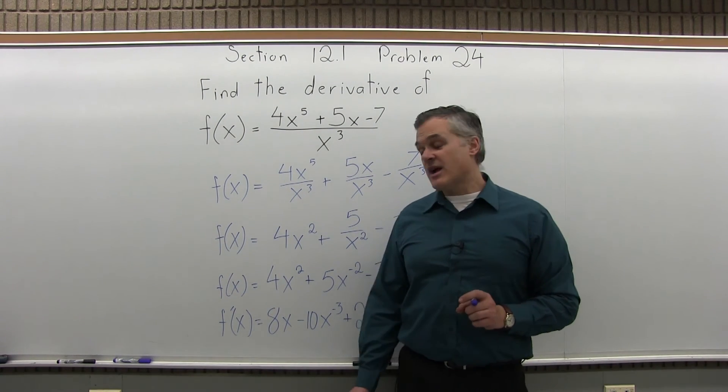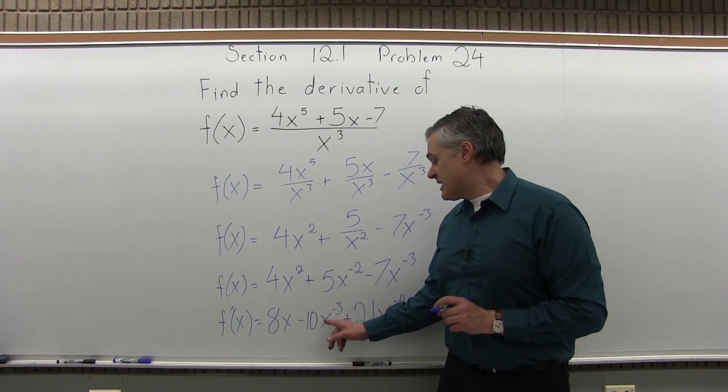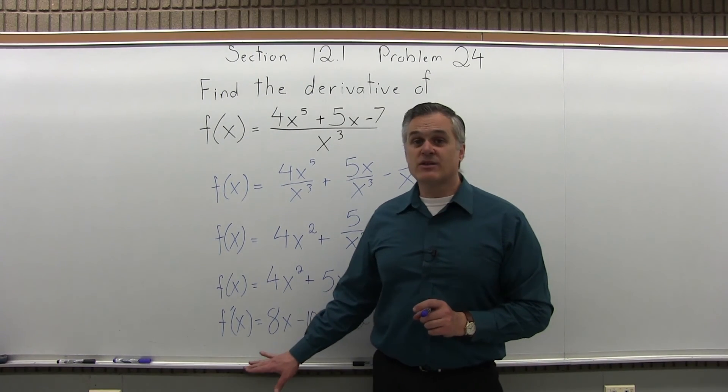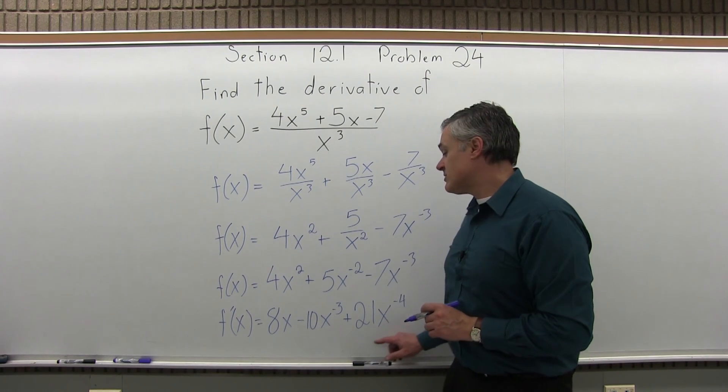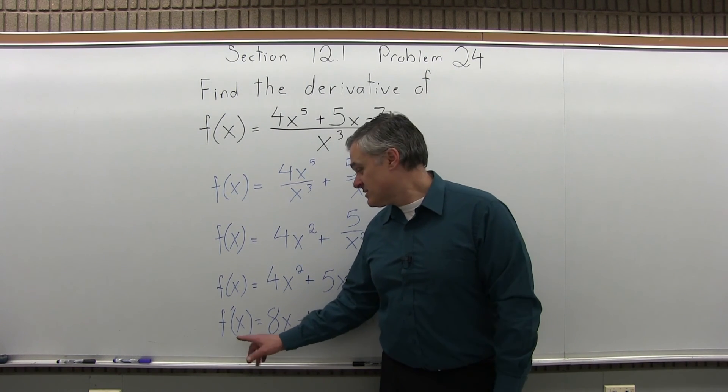And now that's the answer. If you like, the variables that have a negative exponent, if you want, you can put them back in the denominator and make them positive. Or if you want, you could just as well leave it like this. And this will be fine. f prime of x equals 8x minus 10x to the negative 3 plus 21x to the negative 4.